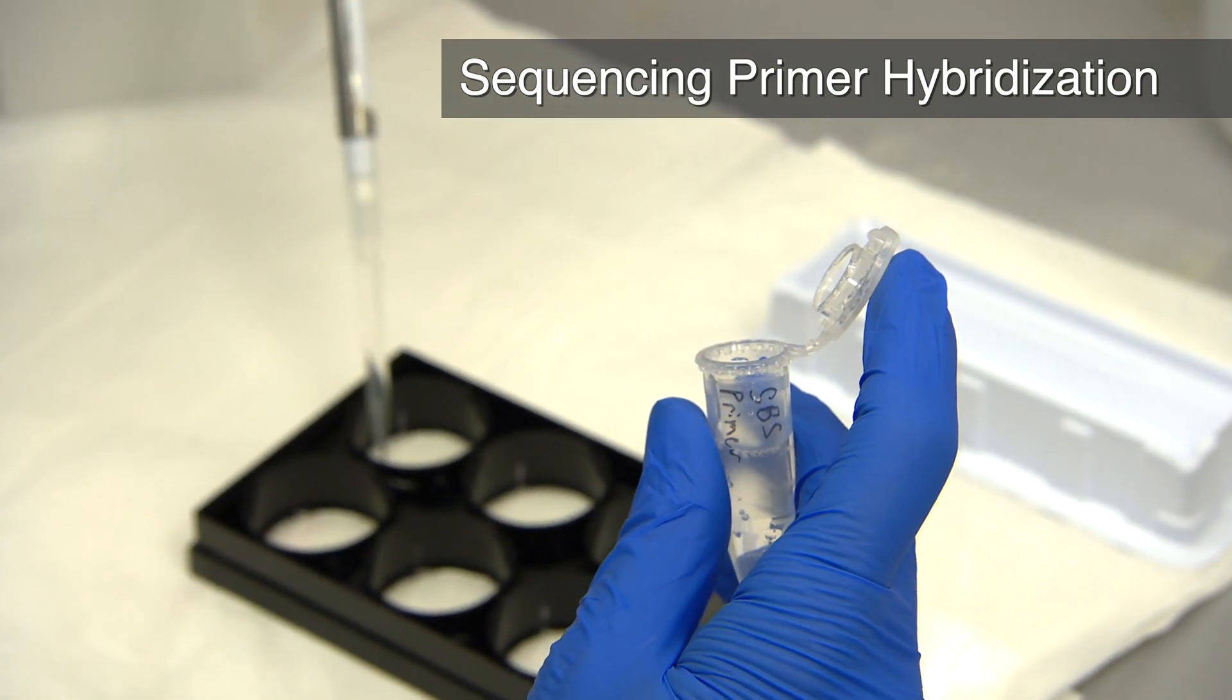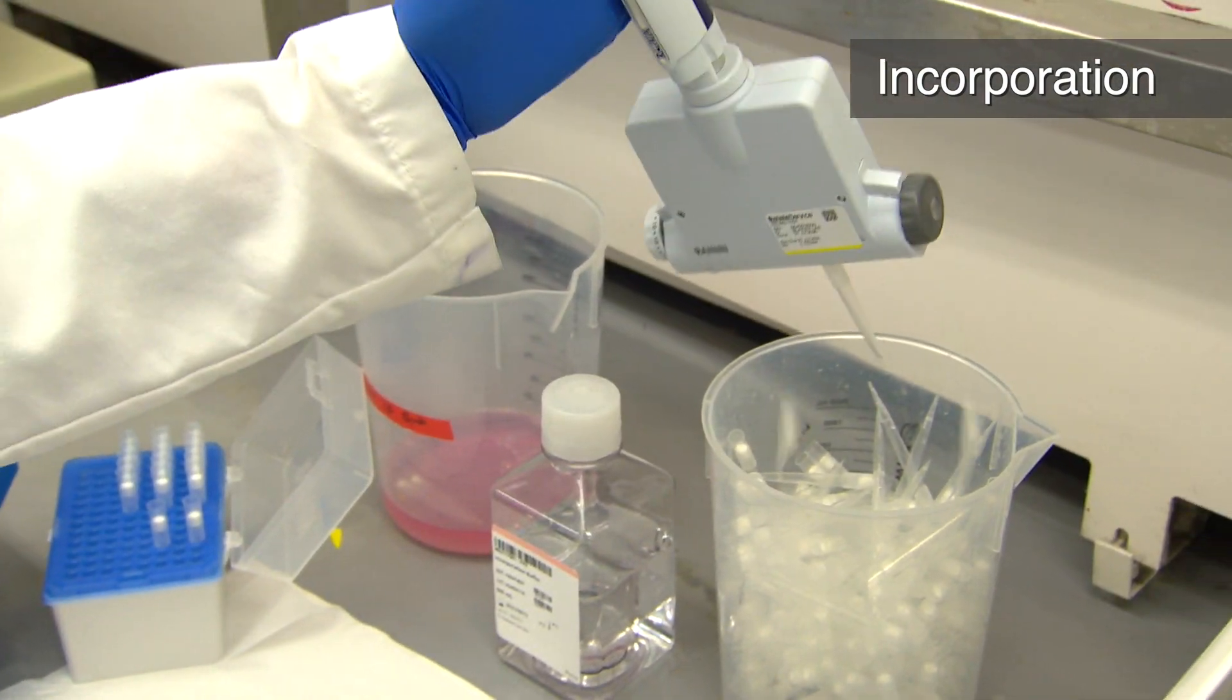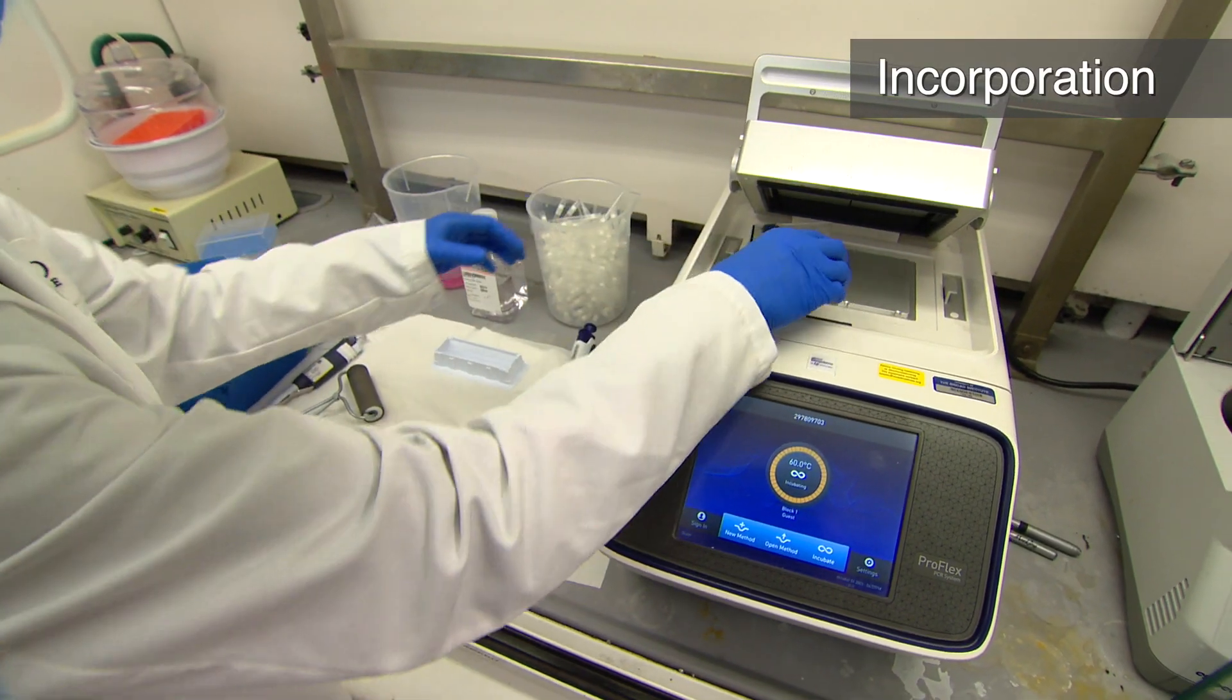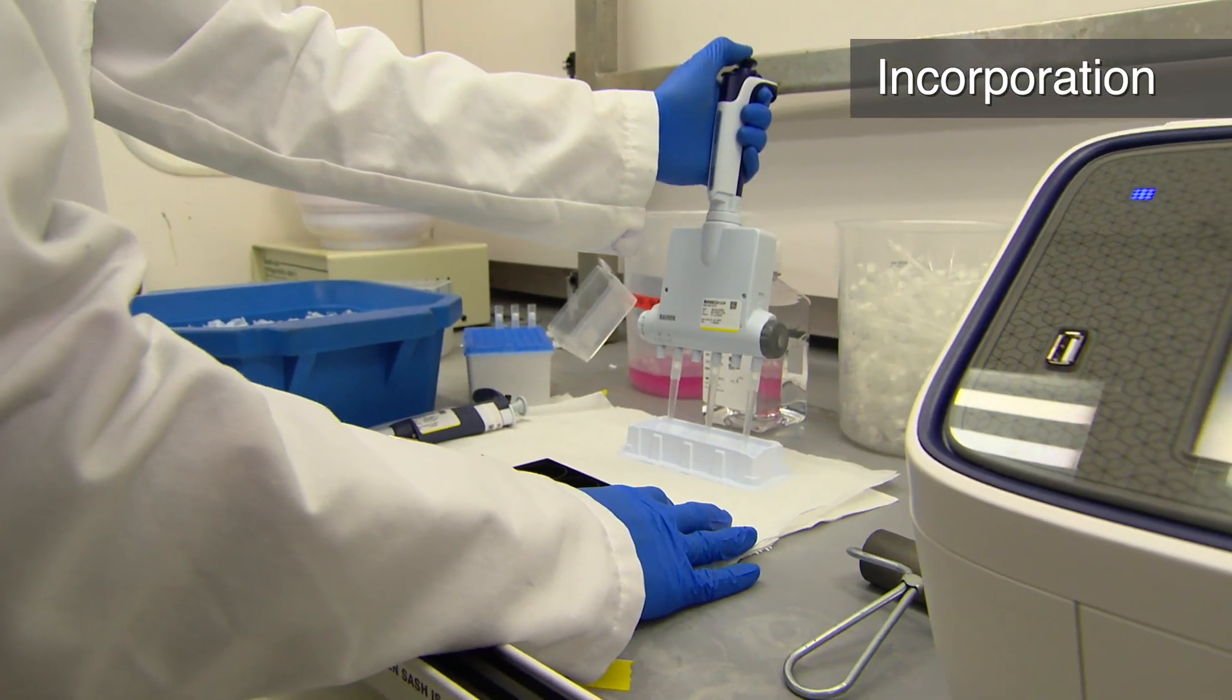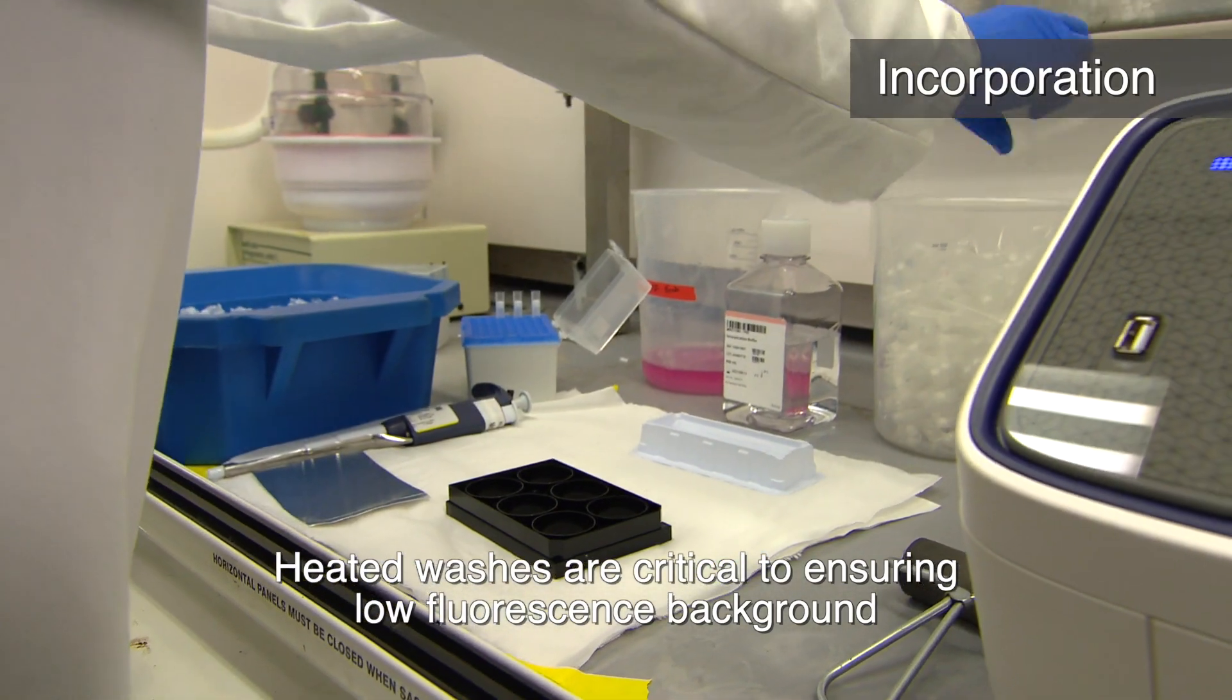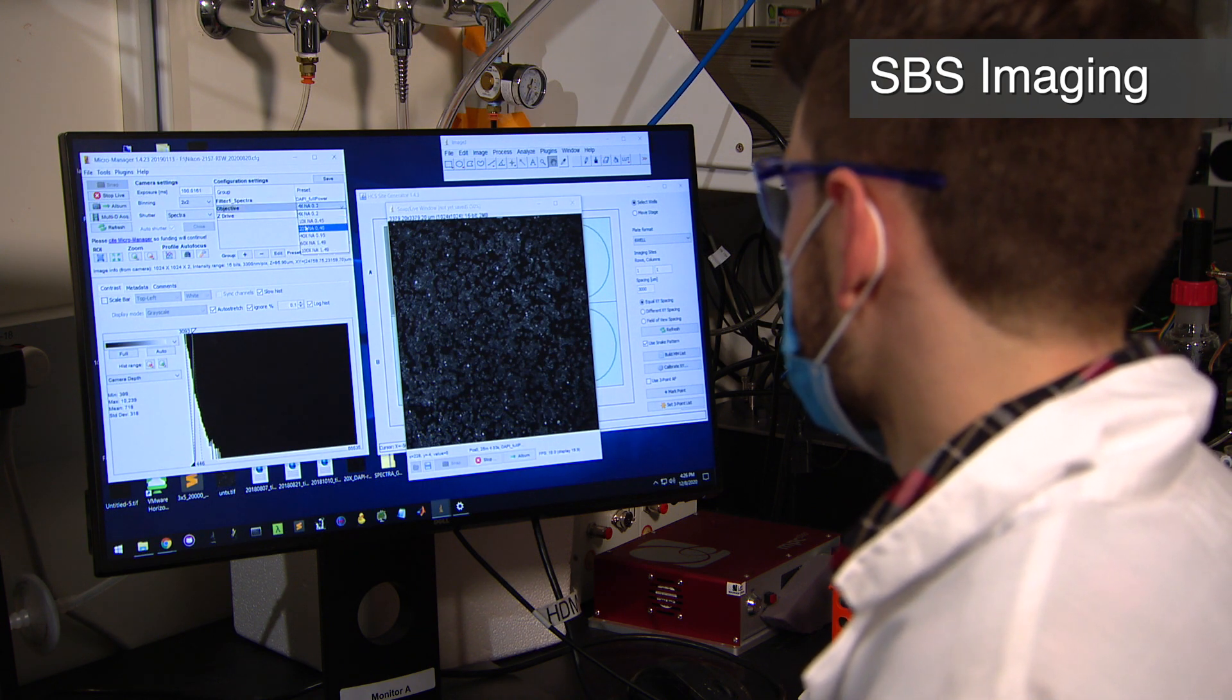Anneal a sequencing primer for 30 minutes at room temperature. Wash excess primer with Illumina PR-2 buffer 3 times. Thaw Illumina sequencing reagents and add 500 microliters of incorporation mix to each well and incubate for 5 minutes at 60C. Next, wash the plate with PR-2 6 times in quick succession. Then wash 5 times at 60C for 5 minutes each to minimize background fluorescence. After washing, stain the nuclei with DAPI solution and acquire the first cycle of sequencing data, carefully ensuring the sample alignment and image positions match the phenotypic data.